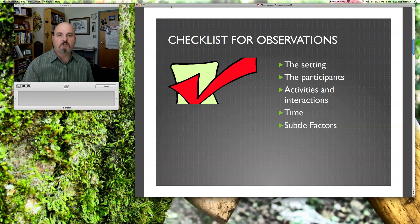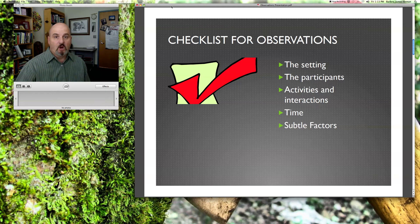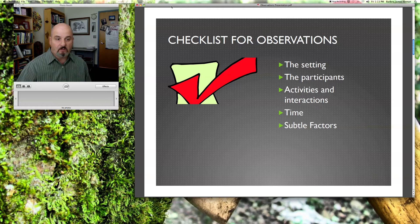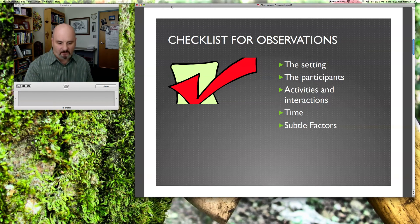So what is the checklist for observations? You're talking about: what is the setting — where is it, what is it, what time of day is it, what is going on, who are the participants, what kinds of activities and interactions are going on, the time — meaning how long does it play out, how briefly does it occur — and then some of the more subtle factors, which we'll talk more about in a minute.